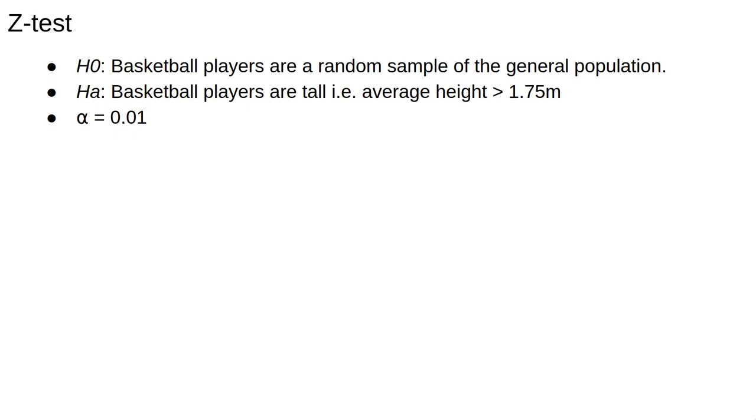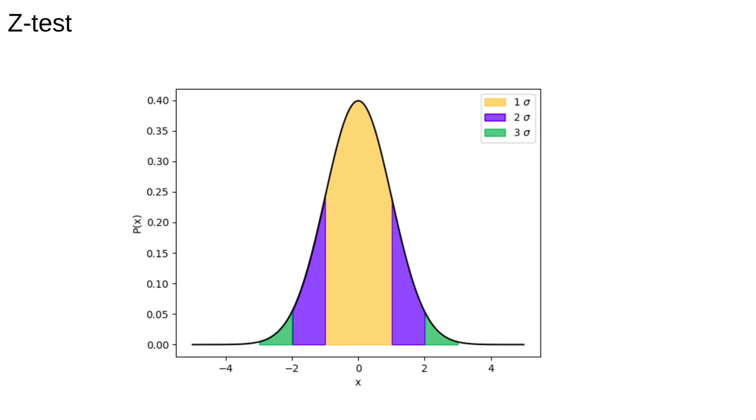Let's define our null and alternative hypothesis. The null hypothesis is that basketball players are a random sample of the general population, and the alternative is that basketball players are tall, that is, they're drawn from a different population with different average height. We should choose a significance level in advance, so we're going to use alpha equals 0.01, and since we only care about deviations in one direction, we'll do a one-sided test.